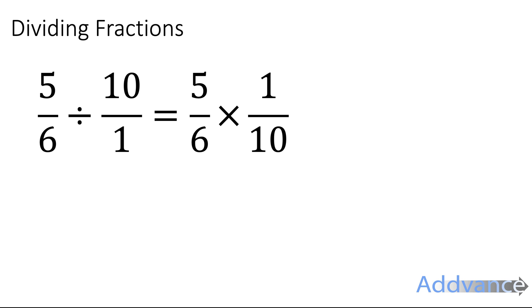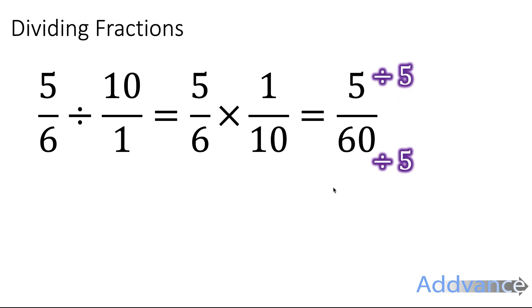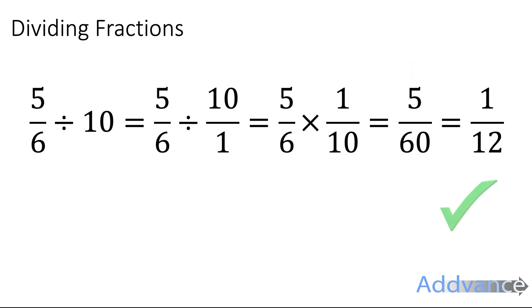5 sixths times 1 over 10, we multiply the top, multiply the bottom. 5 times 1 is 5, 6 times 10 is 60. We divide by 5 to simplify and we get 1 twelfth. And that is the final answer.